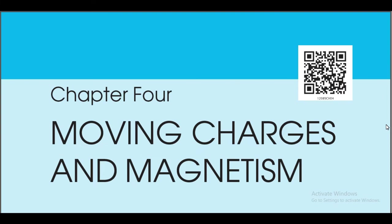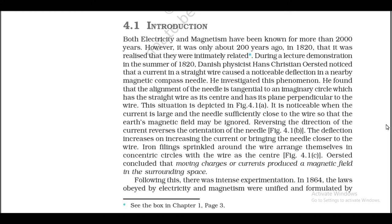Chapter 4: Moving Charges and Magnetism. Section 4.1: Introduction. Both electricity and magnetism have been known for more than 2000 years. However, it was only about 200 years ago, in 1820, that it was realized they were intimately related. During a lecture demonstration in the summer of 1820, Danish physicist Hans Christian Oersted noticed that a current in a straight wire caused a noticeable deflection in a nearby magnetic compass needle.